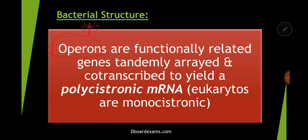What are operons? Operons are functionally related groups of genes which are tandemly arranged, and they are co-transcribed to a huge polycistronic mRNA — mRNA with multiple genes. This is in bacteria. In eukaryotes, the mRNA is monocistronic, meaning it only carries one gene.